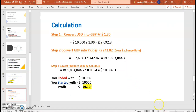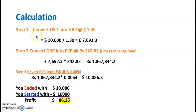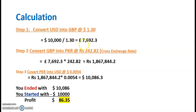Now for the calculations. Step one: we are converting dollars into pounds at the rate of 1.30. We have $10,000 available and each pound costs $1.30. So we divide $10,000 by 1.30 and get 7,692.3 pounds on hand.